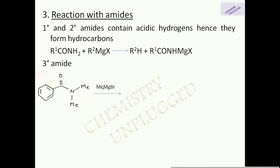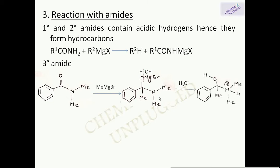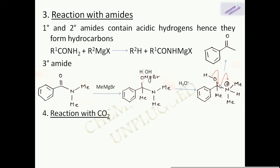Third degree amides have no acidic hydrogen, so they react with the Grignard reagent differently. The alkyl group attaches to the carbonyl carbon. Upon hydrolysis, an OH group forms and a hydrogen attaches to nitrogen. The nitrogen, being positively charged, causes bond rearrangement, breaking one bond and shifting another, yielding a ketone.